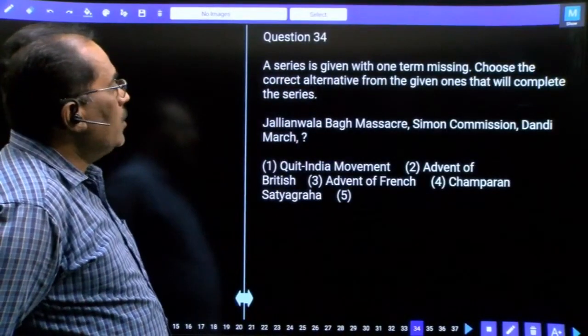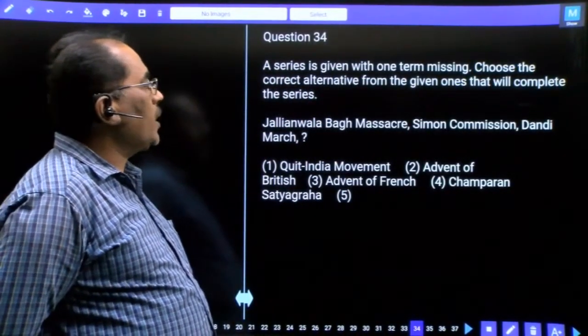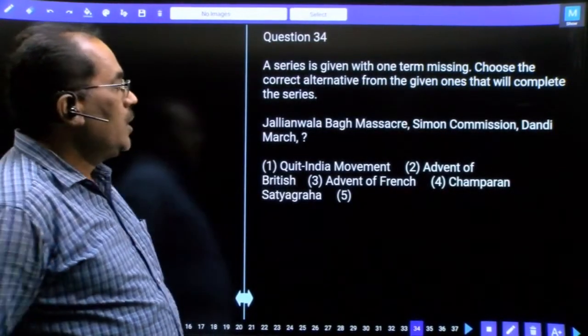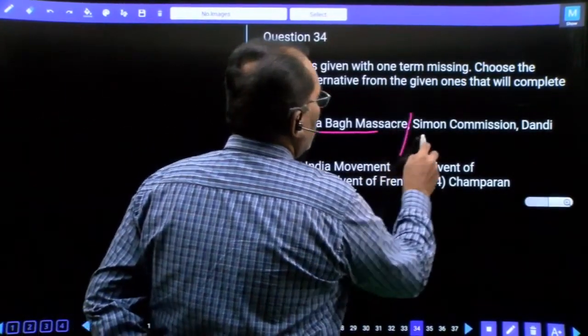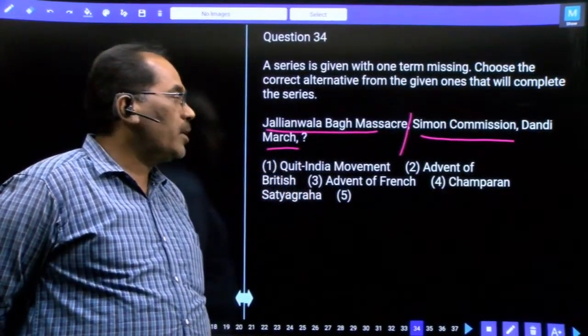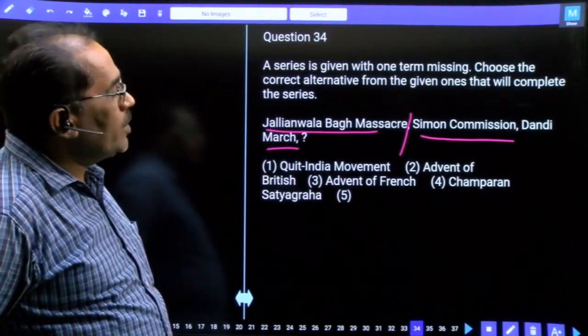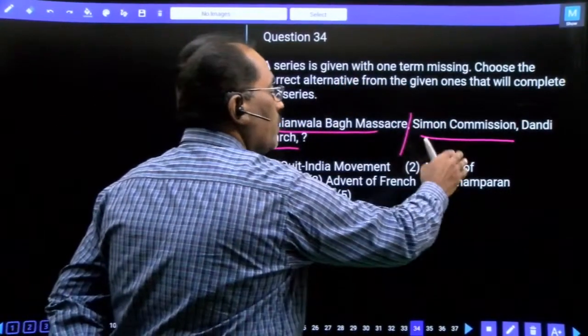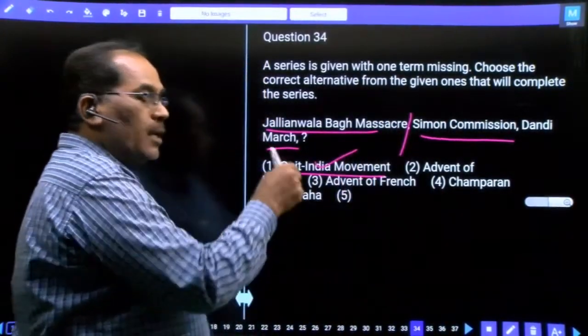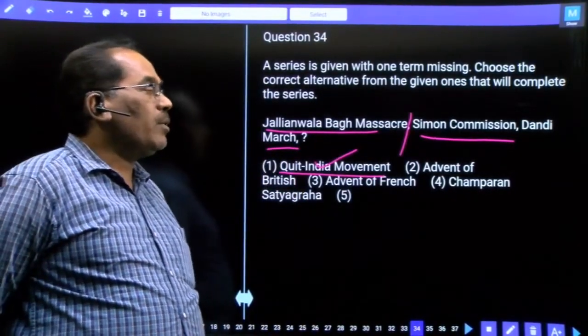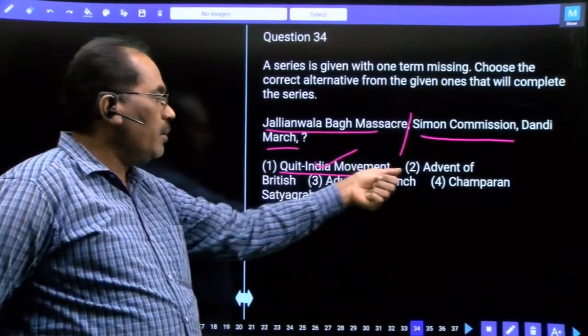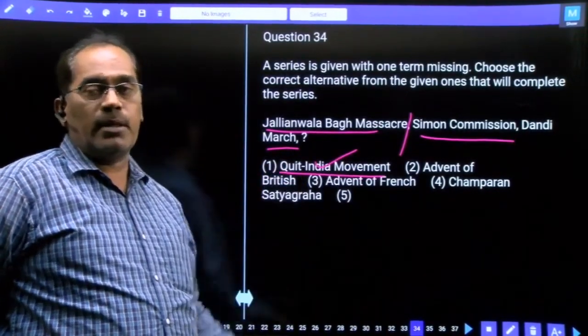Question 34, a series is given with one term missing. Choose the correct alternative that will complete the series. The series includes Jallianwala Bagh, Maskar, Simon Commission, and Dandi March. These are historical events related to when people died in the struggle. The correct chronological order: first Jallianwala Bagh, then Maskar, then Simon Commission, then Dandi March, then Quit India Movement, based on the number of persons who died, one by one.